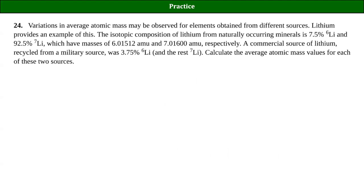Let's do a practice atomic mass question. This word problem mentions that if you have different sources, you can have a different atomic mass for different materials, because you'll wind up having different natural abundances depending on where you get certain materials. This is also really true astronomically — different parts of our solar system have different natural abundances for the elements. Our atomic masses on the periodic table are all based around being on Earth.